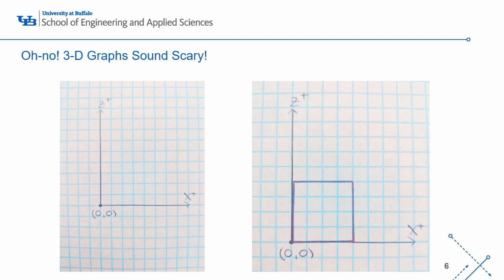Oh no! 3D graphs sound scary! To help understand 3D graphs, let's start with a 2D graph. In this image, we have the X and Z axis. The origin is when X equals 0 and Z equals 0, so at the point (0,0). And here we have a 2D square. The location of the square is at the smallest value of each dimension. In this example, the location of this square is at the origin (0,0).